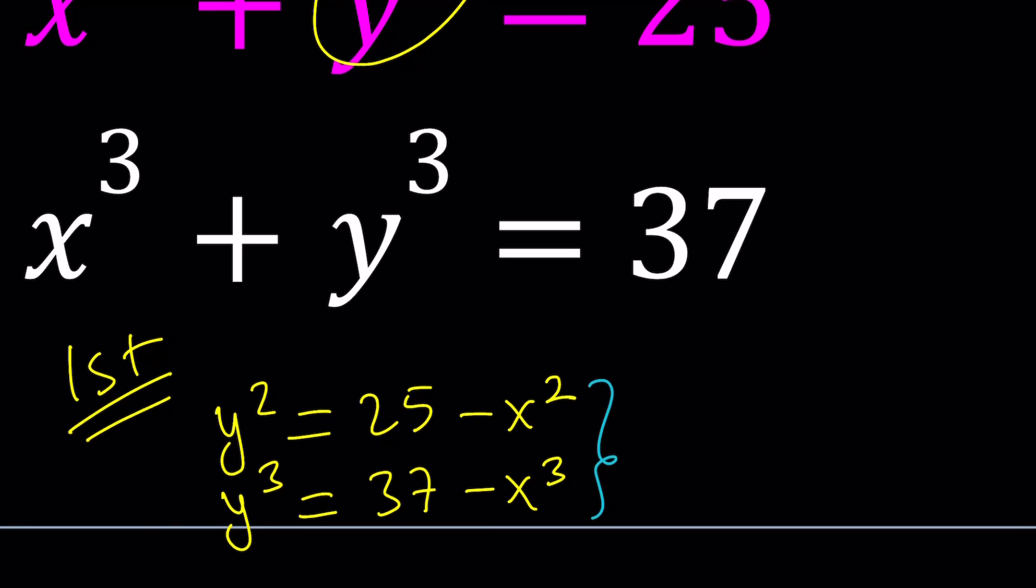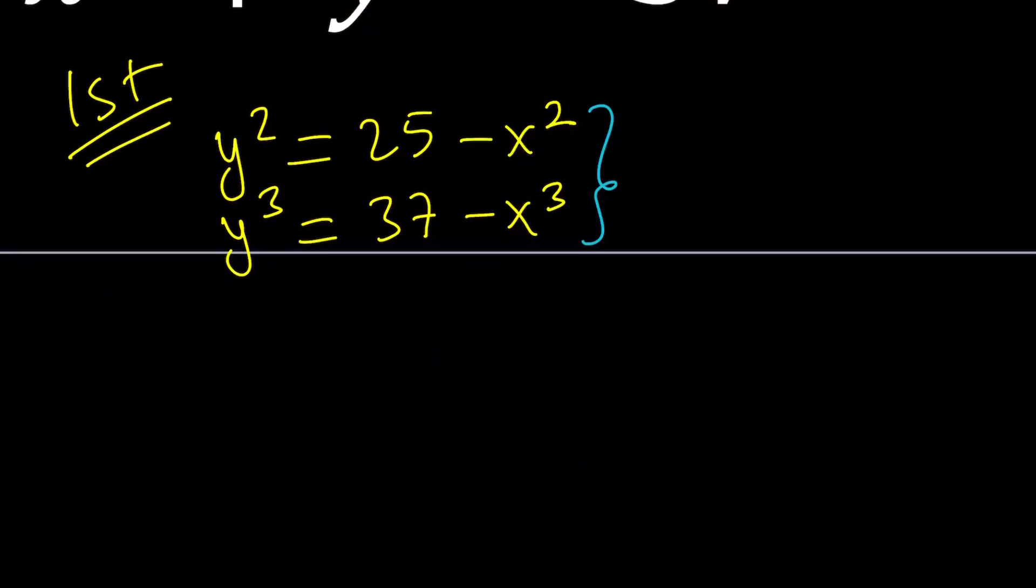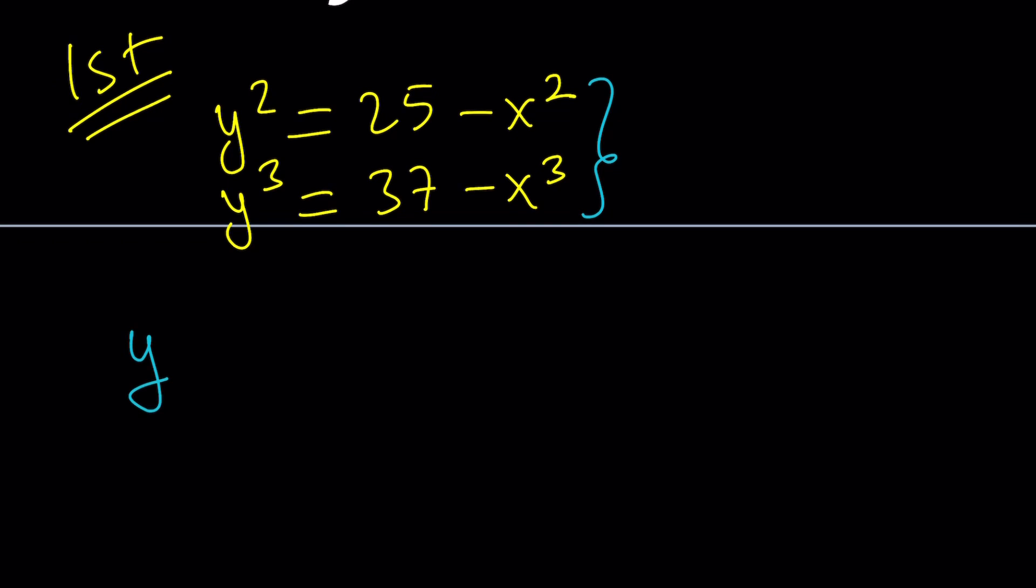So we have a quadratic and a cubic. What can I do with this? Substitution. Why don't we just go ahead and isolate y squared from the first equation. That's going to be my first method. So y squared can be written as 25 minus x squared. And from the second equation I can write y cubed as 37 minus x cubed. In other words isolate the powers of y and write them in terms of x.